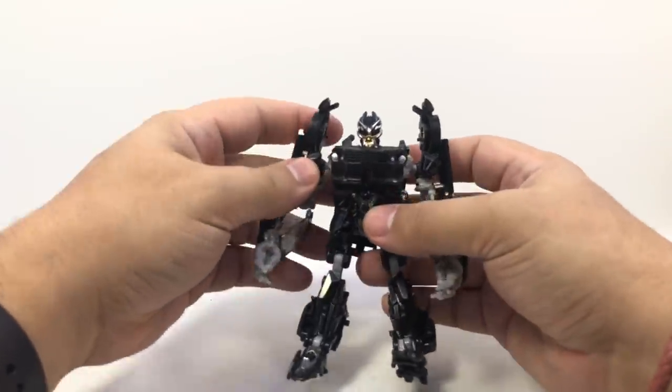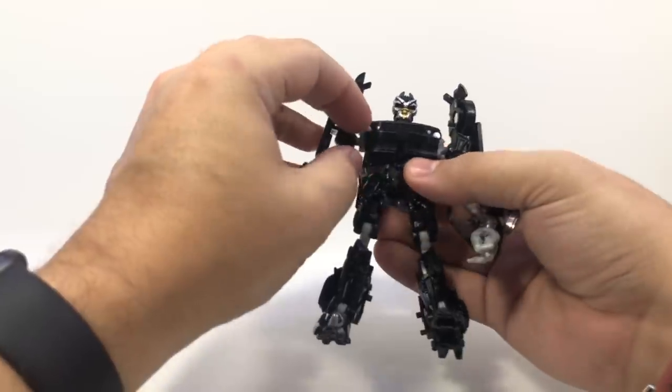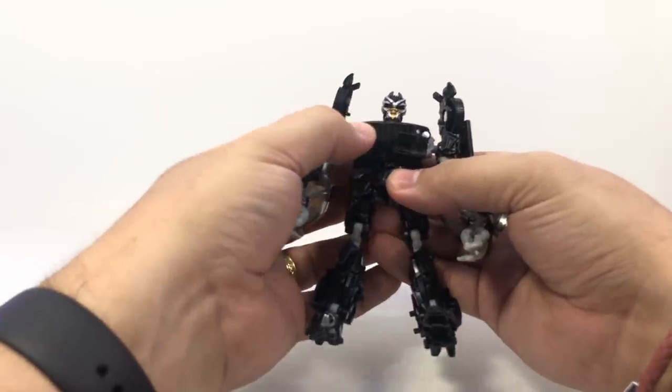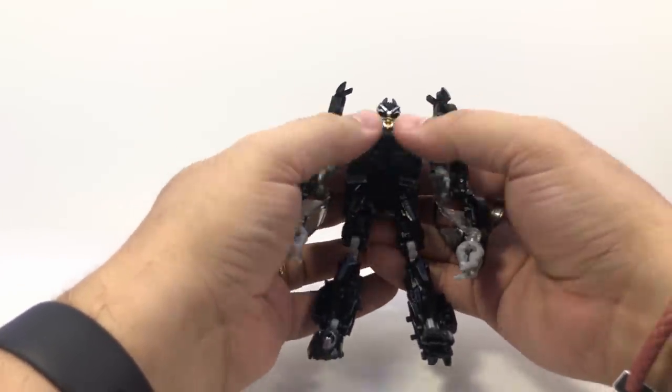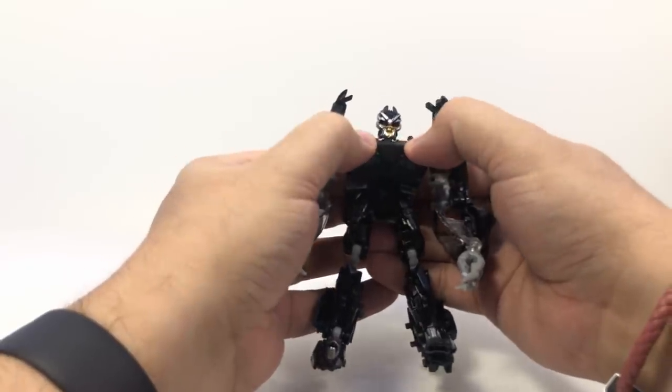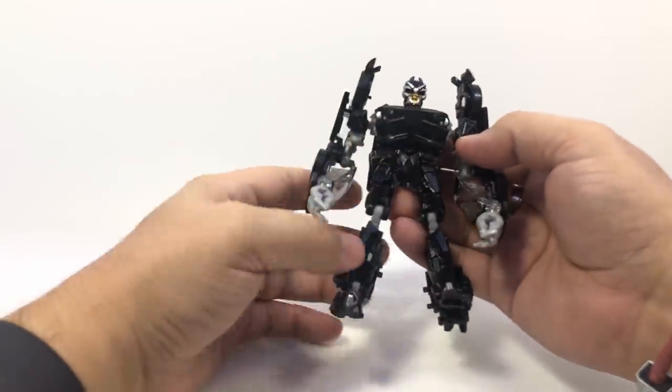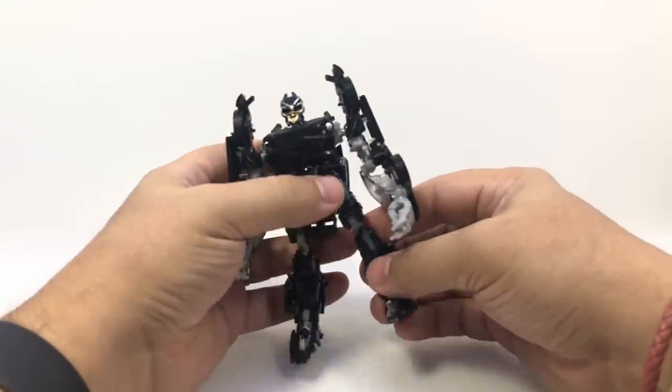And then on his chest, you got to bring his head up. Take these little pieces right here, push them down. So they angle out a little bit and then angle them up in the middle, give them that deformed chest. And there he is in robot mode.